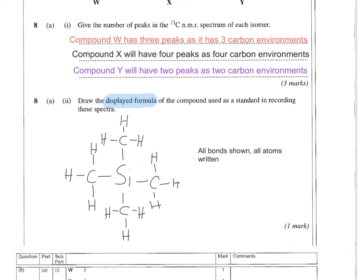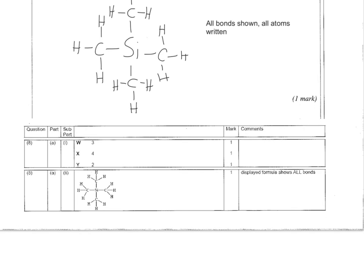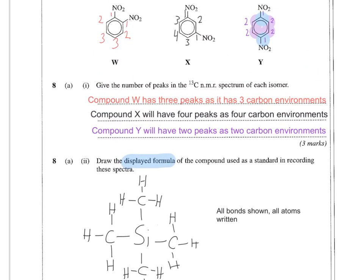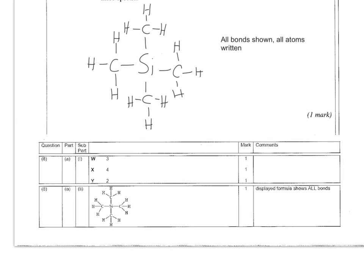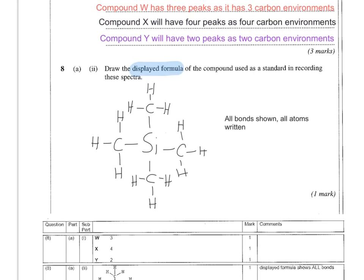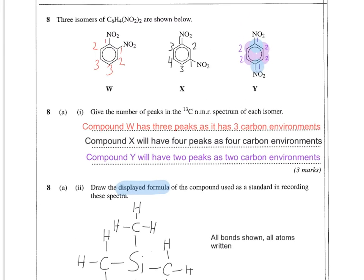Now what we can do is have a look at the mark scheme. Looking at our mark scheme, W, X and Y with 3, 4 and 2 peaks respectively. The displayed formula, you can see quite clearly, is very similar to what we've drawn. It's worth remembering some of these small details like displayed formula, and also how to spot when carbon environments are actually the same. It's an easy one to miss, so do be careful of that when you're practicing your own examples.